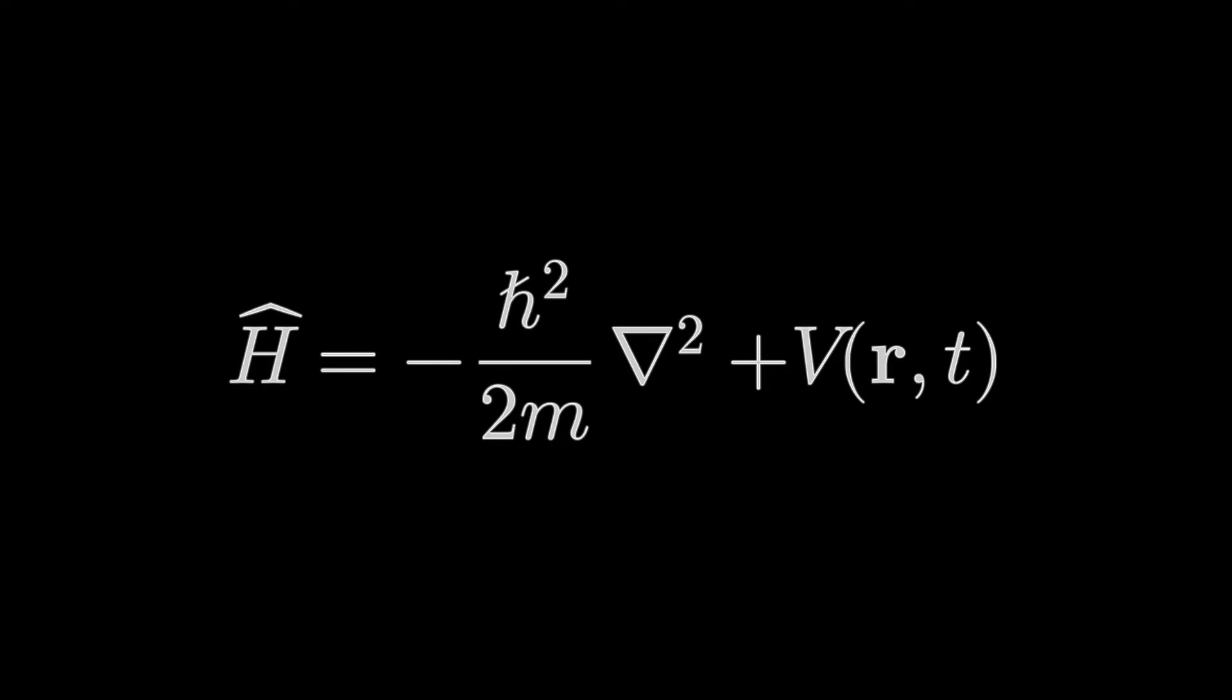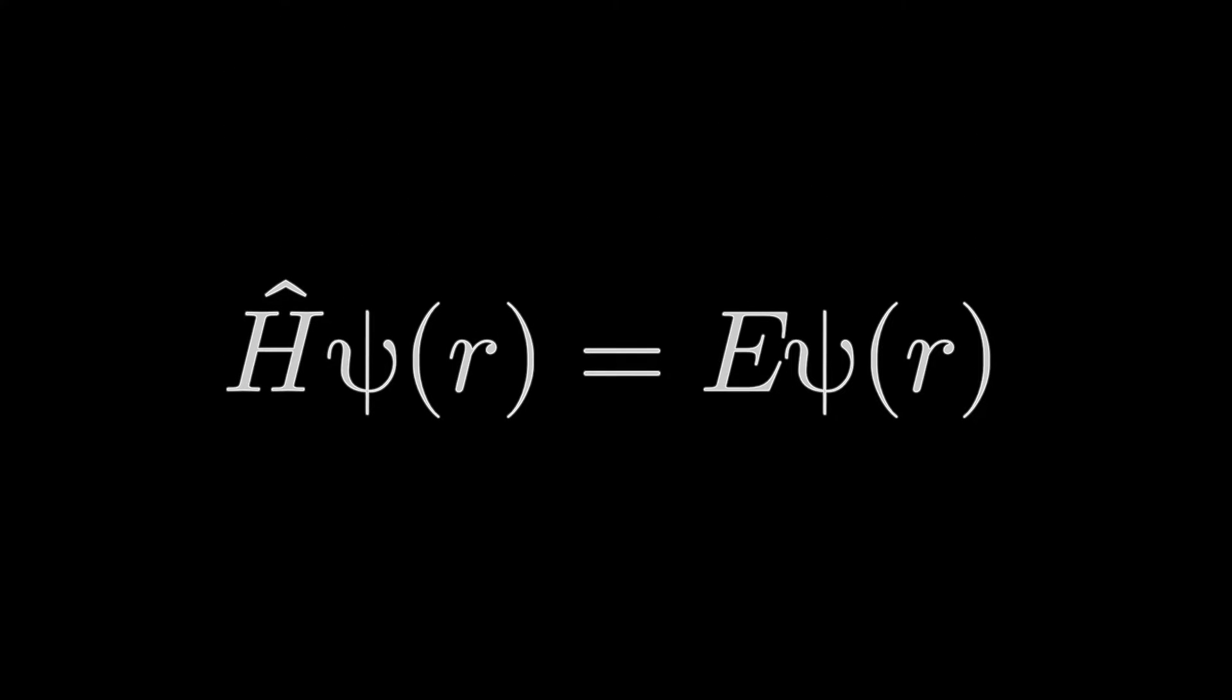In quantum mechanics, we define the Hamiltonian as the following. Hence, with this definition, we can rewrite the Schrödinger equation simply as H-hat ψ(r) equals E ψ(r), and that's it. This form is way more compact and easier to write.